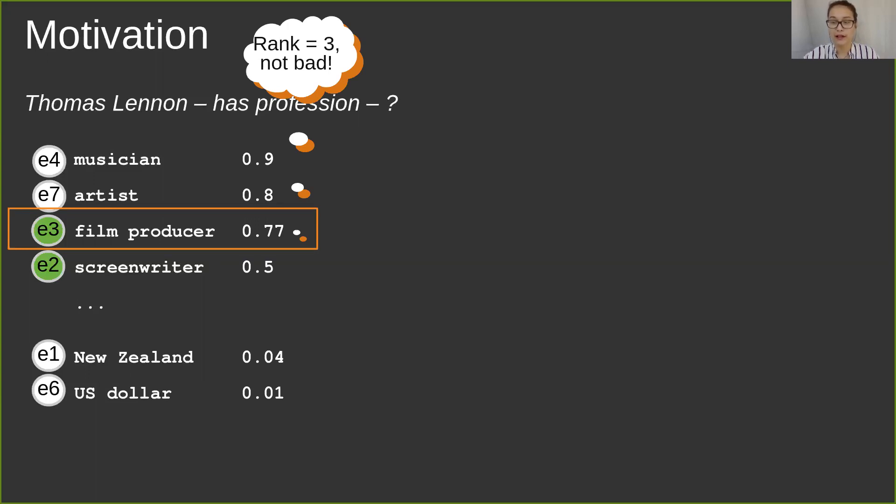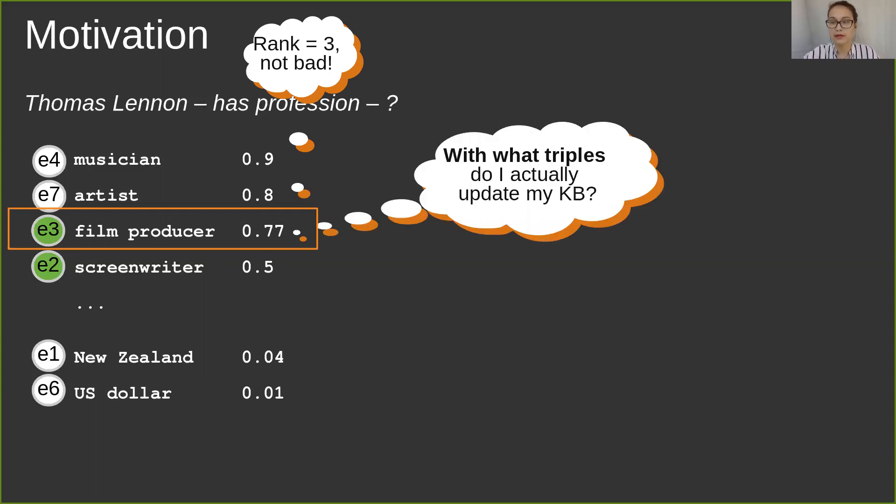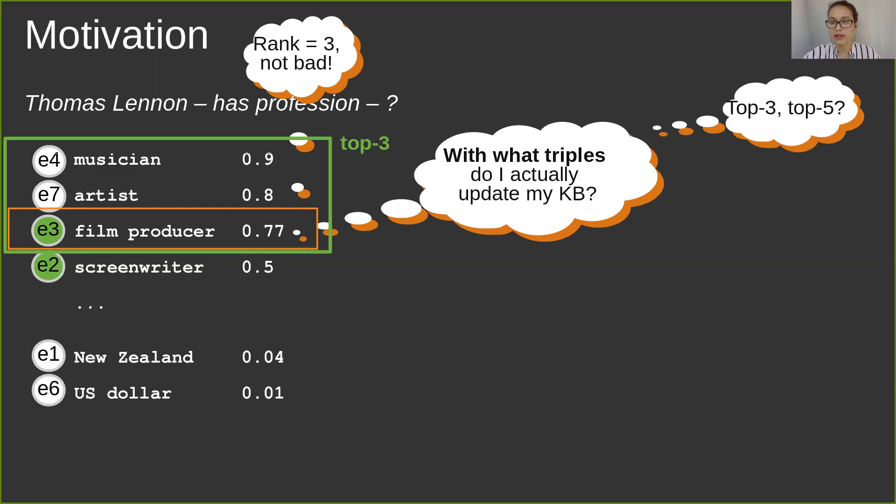But imagine that we are in an actual completion scenario and have to decide which facts will be included into the knowledge base and which will not. Where should we set a threshold? Assume that following the Hits@3 logic, we make a cut at the third position and include the top 3 facts of highly scored entities into the knowledge base.